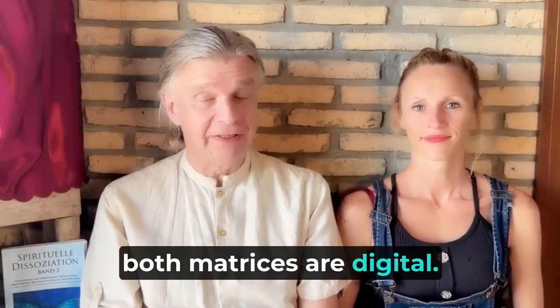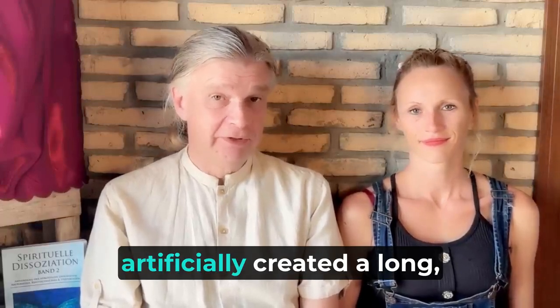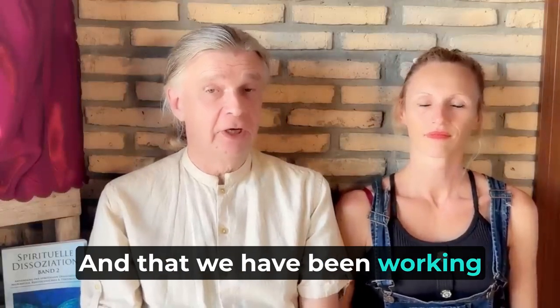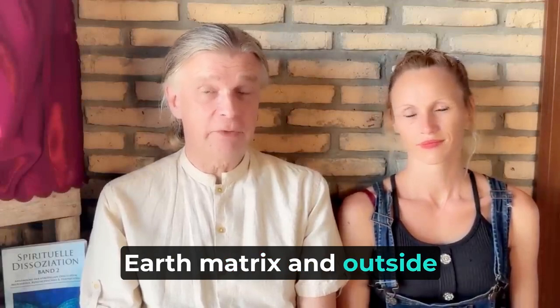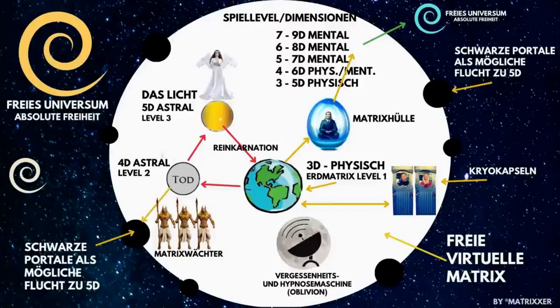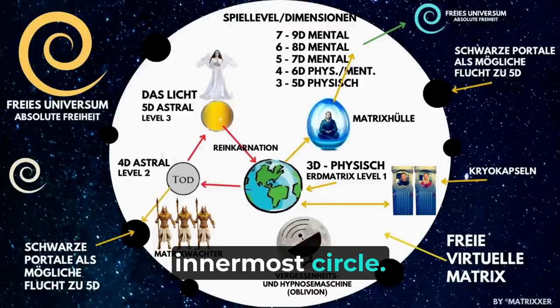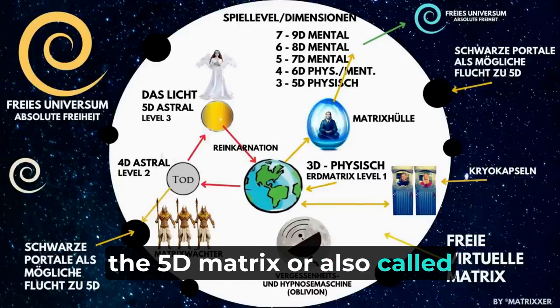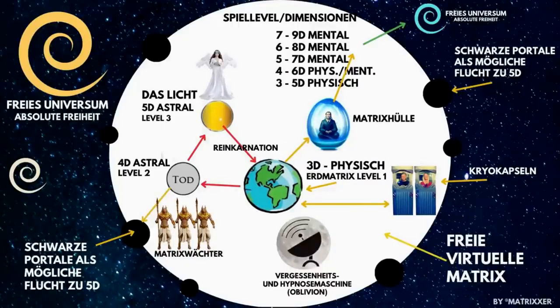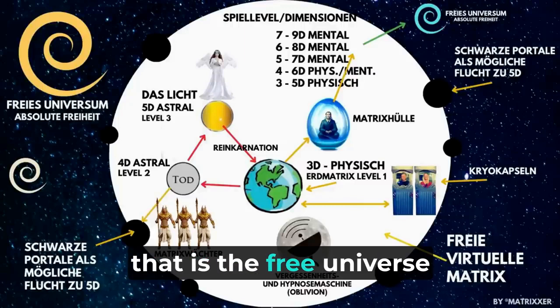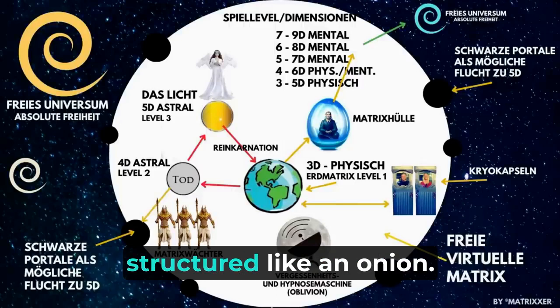Actually, both matrices are digital — simulations that were artificially created a long, long time ago, and that we have been working around for perhaps thousands of years. As you can see on the graphic, the 3D Matrix is in the innermost circle. Surrounding it is the 5D Matrix, also called the free Matrix. And on the outside, the outermost ring, is the free Universe, or absolute freedom. So we have three layers structured like an onion.